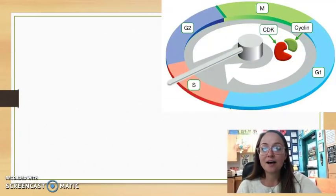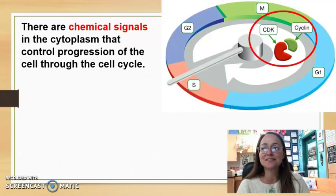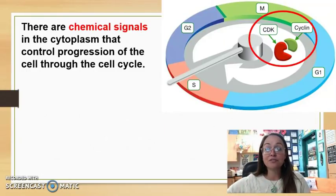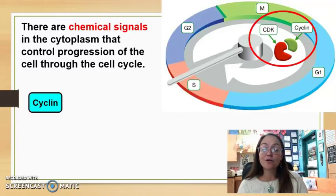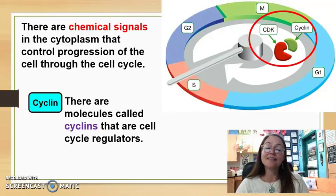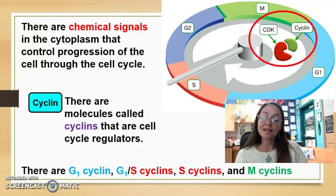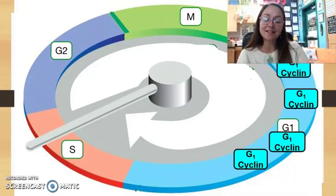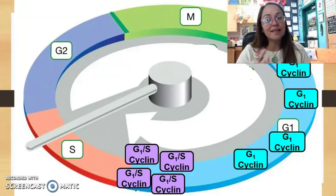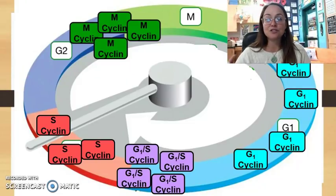Here you have the cell cycle. There are chemical signals in the cytoplasm that control the progression throughout the cell cycle. One of those signals is cyclin, and the amount of cyclins will vary as the cell goes through different phases. These are our cell cycle regulators on the inside of the cell. We have G1 cyclins, G1/S cyclins, S phase cyclins, as well as M cyclins. In G1, there are cyclins specific to G1; there are cyclins specific to the G1/S checkpoint; we have cyclins for S phase; as well as cyclins specific for the G2/M phase.